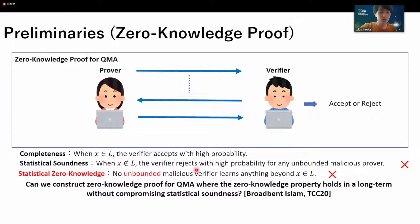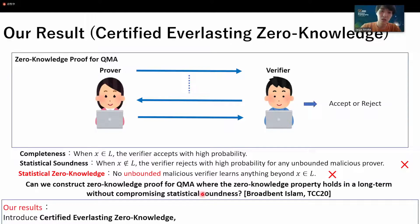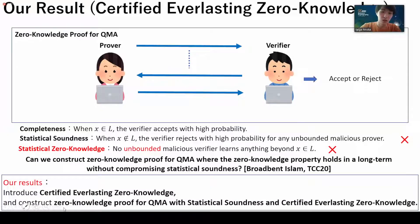Note that this question was originally posed by Broadbent and Islam in TCC 2020. In our work, we resolve this question affirmatively. For that, first we introduce a new notion of zero-knowledge property, which we call certified everlasting zero-knowledge, and then construct zero-knowledge proof for QMA with statistical soundness and certified everlasting zero-knowledge at the same time.